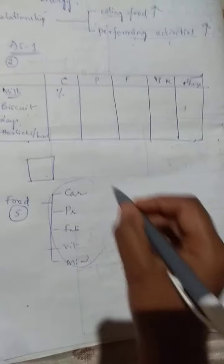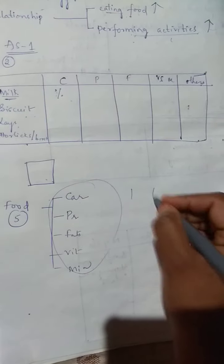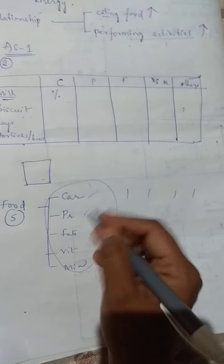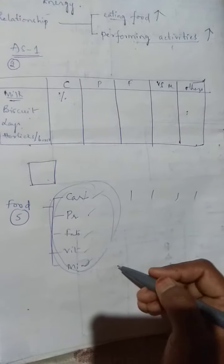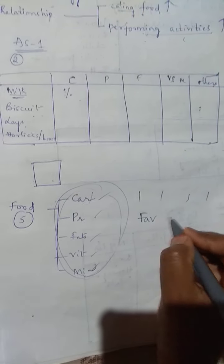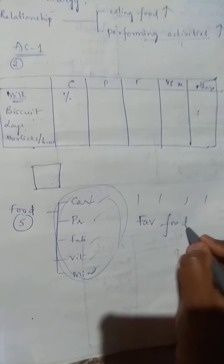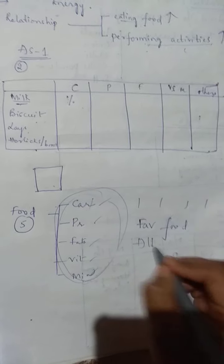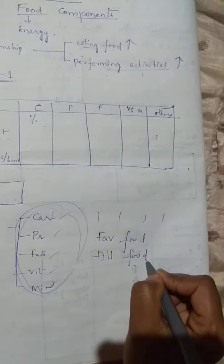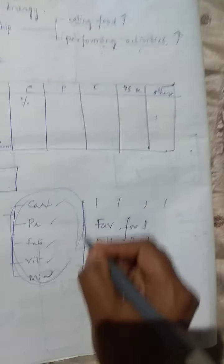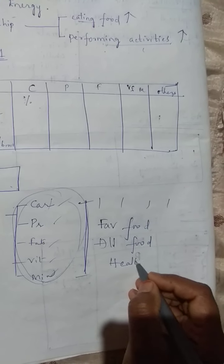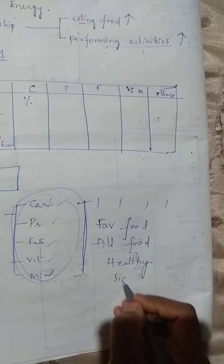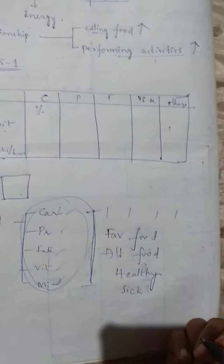These are not all present in one food. Different foods have different components. These are called food components. So you must not only eat your favorite food. You have to eat all foods so that you will get all these. If you have all these, you will be healthy, or else you will fall sick.